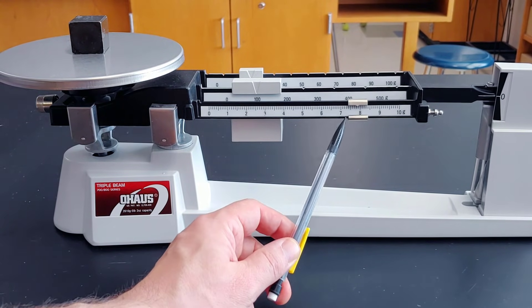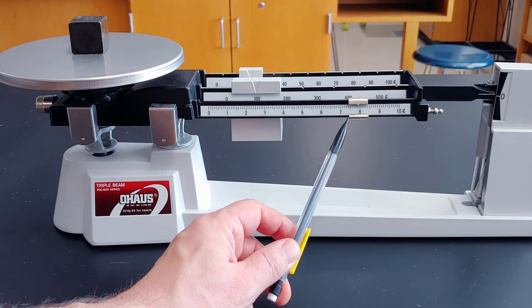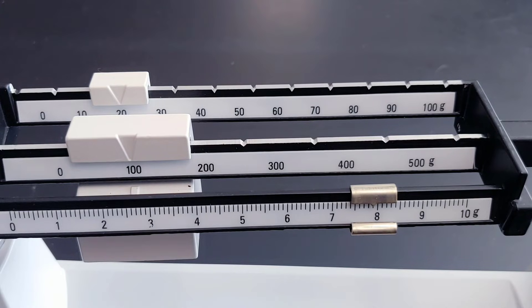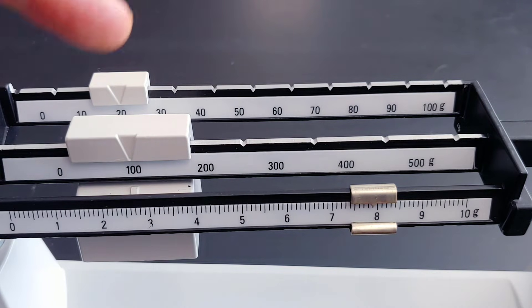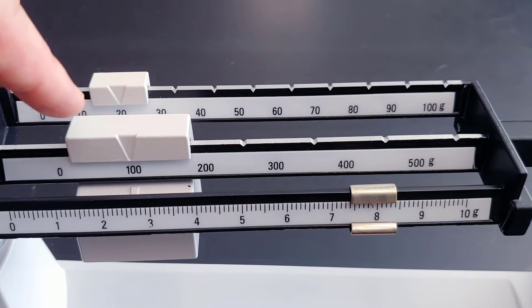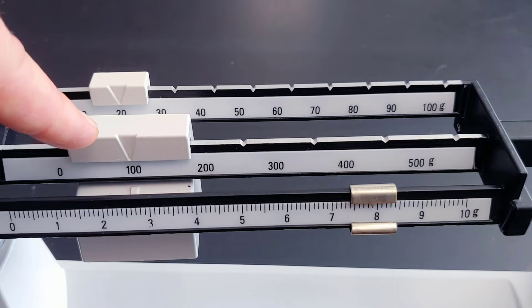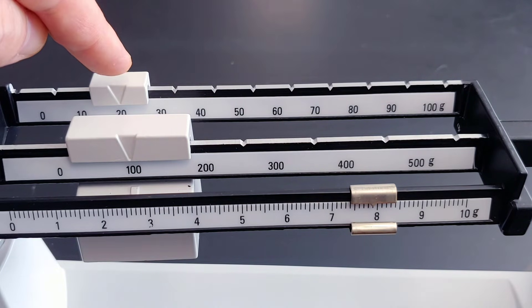Now let's zoom in and see what number we have. To find the mass, we need to add up each of the arms. This arm's at 100, so we have 120.